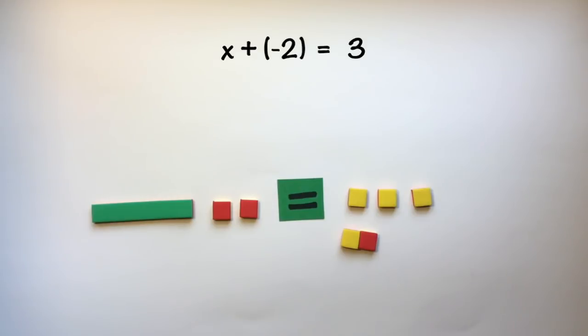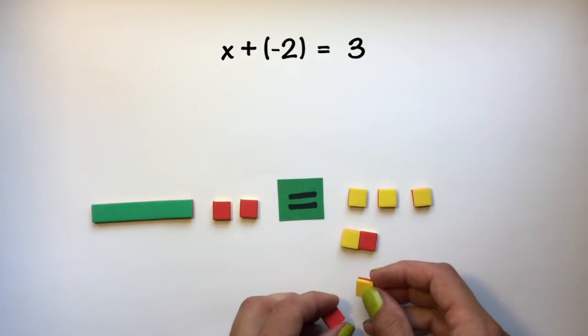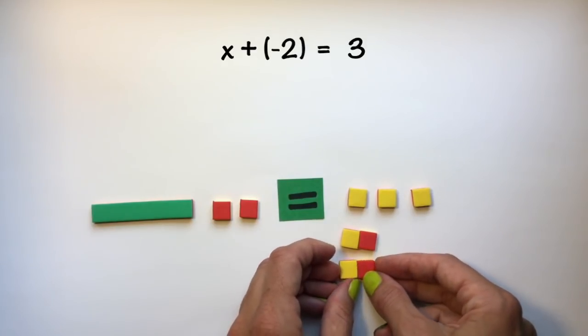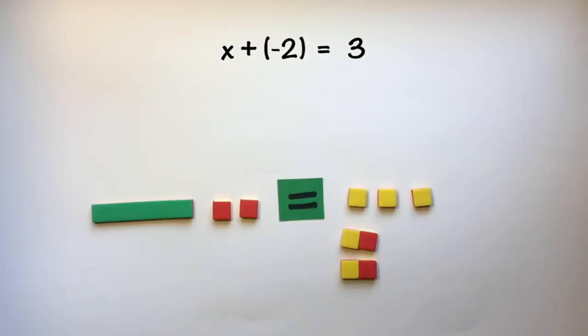Whenever you're stuck solving a problem with algebra tiles, always remember that you can add zero pairs at any point in time to any part of your equation and still keep it at the same value that it was before.